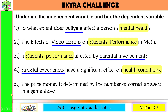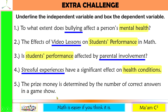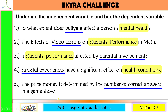Last: the prize money is determined by the number of correct answers in a game show. You join a game show and your prize depends on the number of correct answers. So the independent variable, or controlled variable, is the number of correct answers, and the responding variable, or dependent variable, is the prize money.